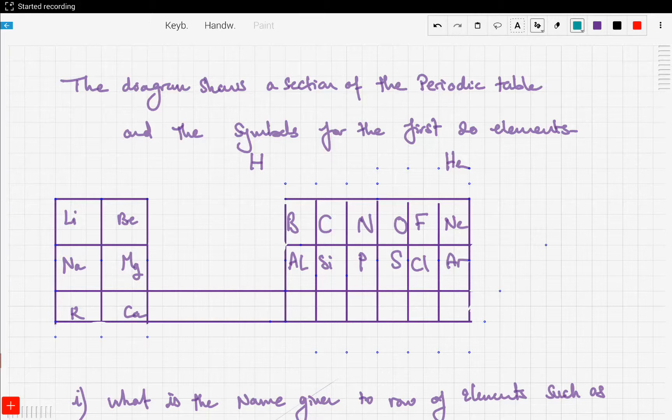Now let's solve a past paper example regarding the periodic table and elements. This question is usually given without a periodic table, so imagine solving this question without one. Let's get started. The question says a diagram shows